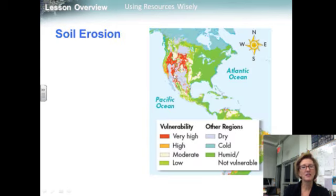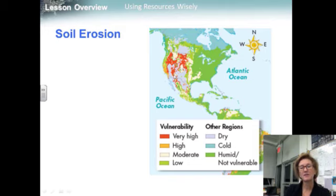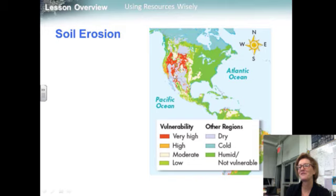In parts of the world with dry climates, a combination of farming, overgrazing of animals, seasonal droughts, and climate change can turn farmland into desert. This process is called desertification. Roughly 40% of Earth's land is considered at risk for desertification. This map shows vulnerable areas in North and South America.